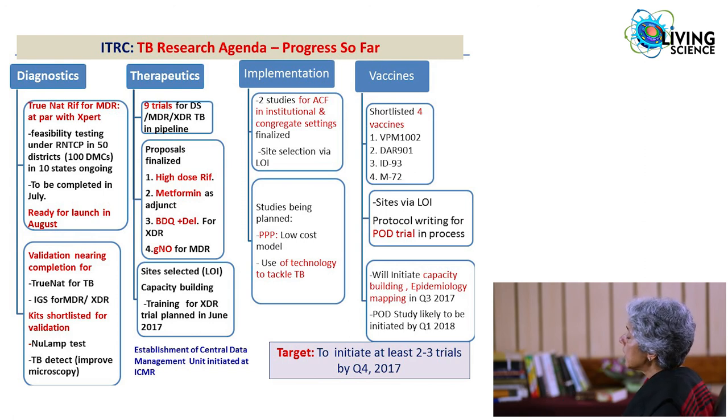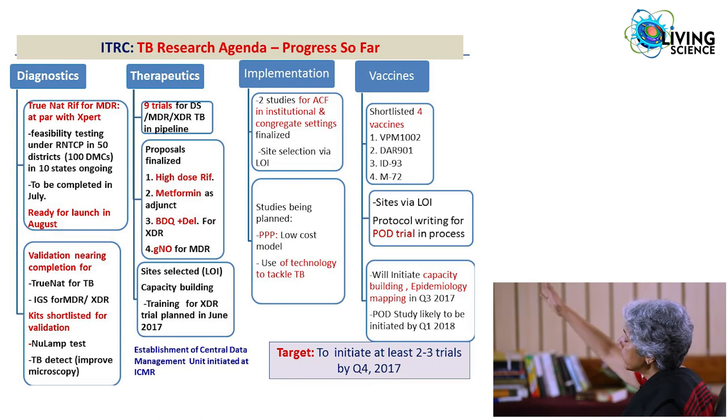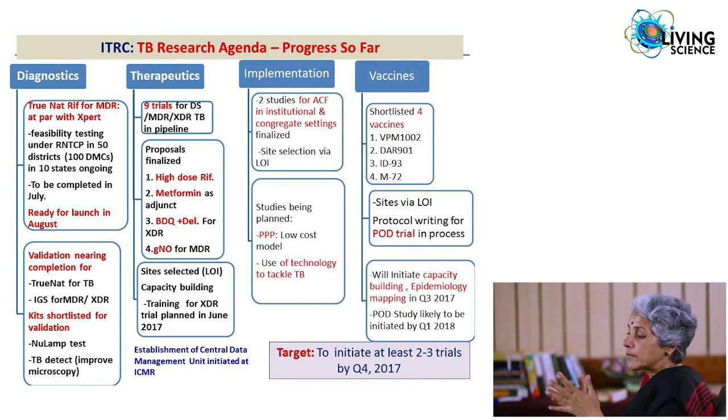In therapeutics, a number of clinical trials have been developed using metformin, combinations of new drugs like bedaquiline and delamanid, and high-dose rifampicin. We are currently selecting sites, building capacity, and training for these trials. For vaccines, we have identified several promising vaccine candidates from groups around the world and want to do a head-to-head trial of the best candidates in India among household contacts, who are at high risk. This will be a very ambitious large trial costing over 100 crores, but we have brought all partners around the table.